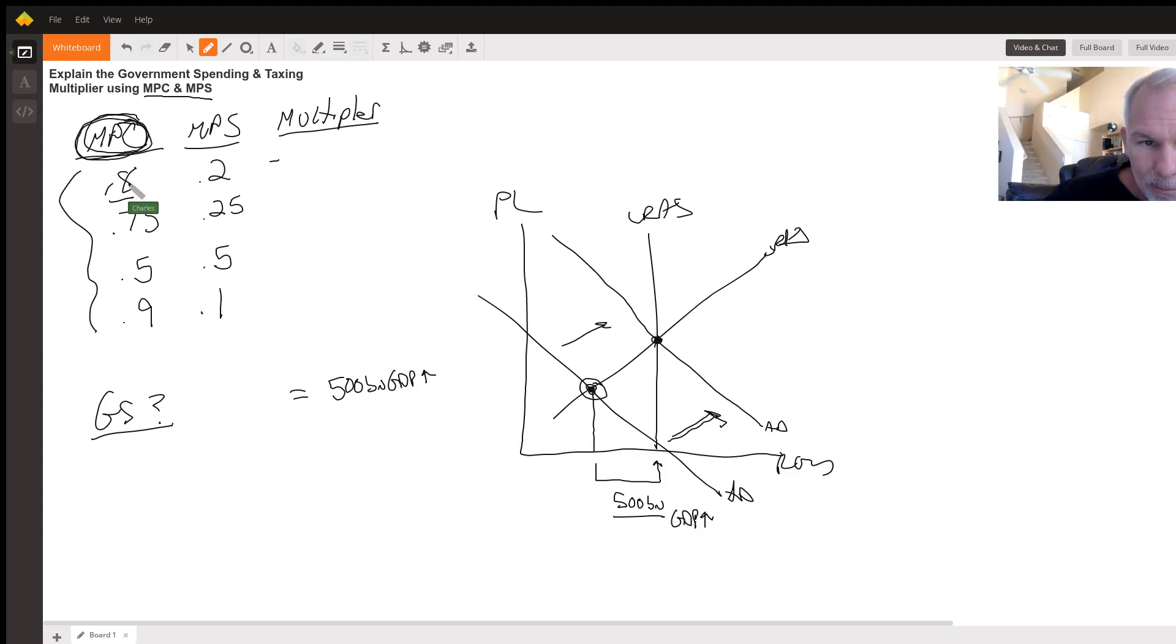They're going to give you the MPC. Let's say they give us 0.8. I know my MPS is 0.2. You have to know the formula for the multiplier. There's two of them. One is 1 over 1 minus MPC and 1 over MPS. Guess which one I use because I'm simple like a child. I'm going to use the 1 over the MPS. So if my MPS is 0.2, it's just 1 over 0.2. 0.2 or 20 cents goes into $1 how many times? Five times. So my multiplier here is five.